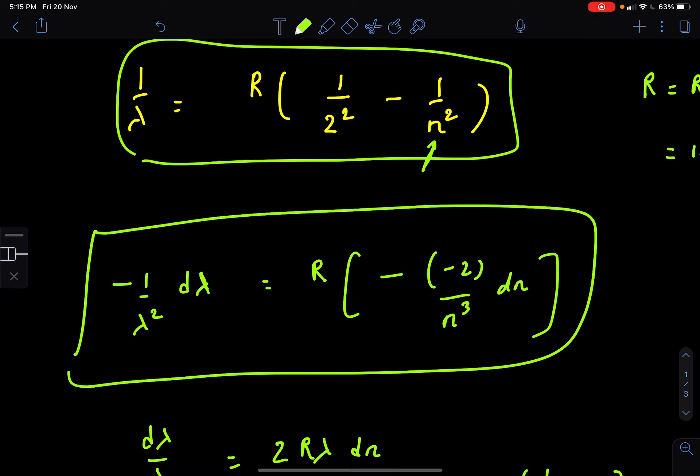Which means when initially we had n, there was lambda n. So electron was coming from n to 2. But now it is coming from n plus 1 to 2. So lambda has also become lambda n plus 1. So lambda has changed. How much is the change in lambda? Because of how much change in n? That is related by this.